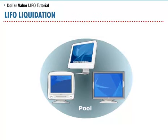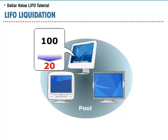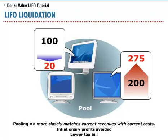To see how pooling works, let's look at the following example. Suppose the quantity of flat-screen monitors is currently at 100 units, made up of monitors from the past three years. Because of a shortage of a key part, the inventory level drops to 20. With no pooling, inflationary profits and a high tax bill may result because current sales are matched with historic lower costs. However, by pooling all the different kinds of monitors together, that situation may be avoided because the decrease in flat-screen monitors may be offset by an increase in regular monitors — for example, when flat-screens decrease from 100 to 20 units, regular monitors may increase from 200 to 275 units. Current revenues will be matched with more current costs and inflationary profits and a high tax bill are avoided.